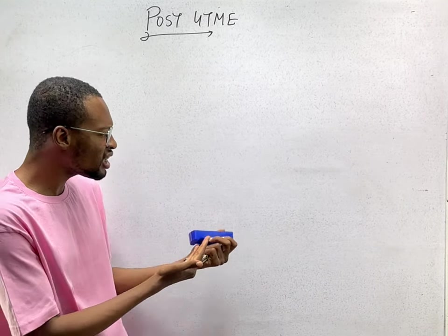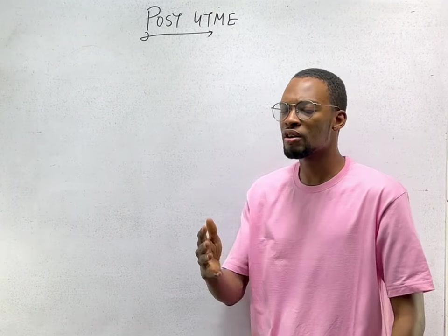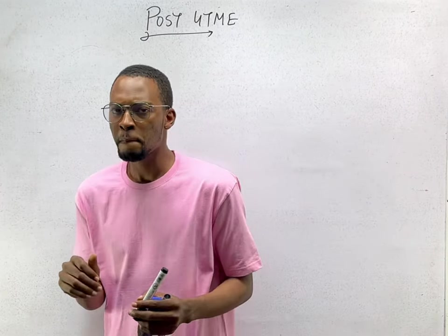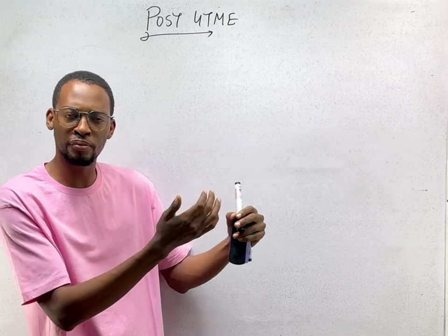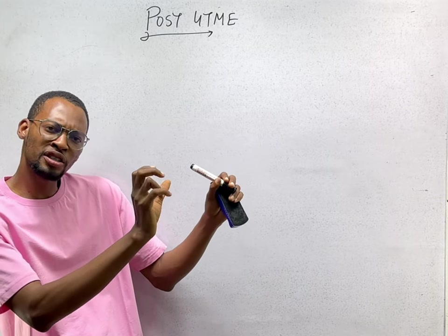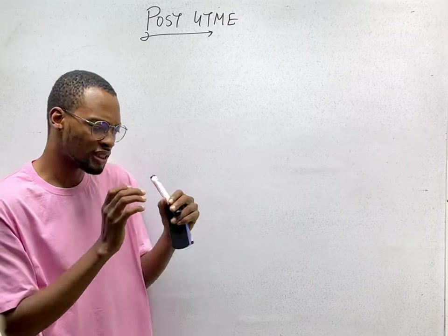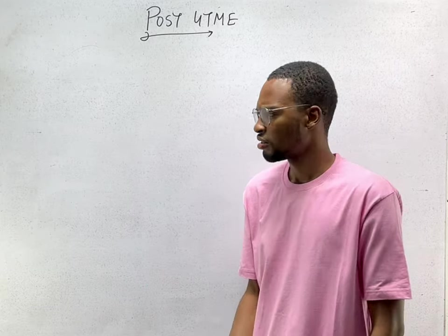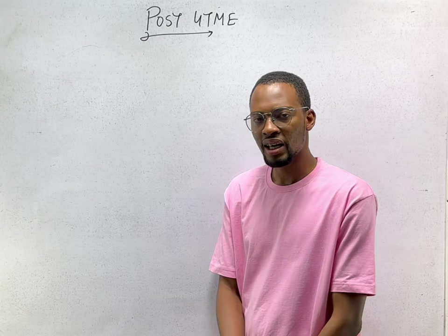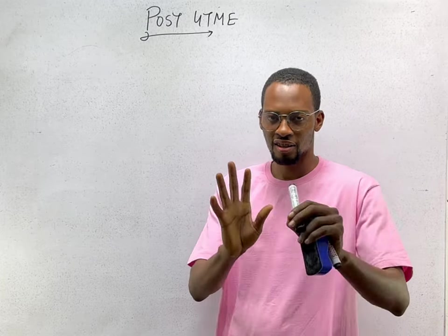In a JAMB or post-UTME question, you may see two words in a sentence. I saw him cross the road. I saw him crossing the road. Ladies and gentlemen, you may be tempted to pick either of those options. Meanwhile, the sentence has subtle explanation or certain keywords that will make the one you least expect to be correct. If I say, I stood by the train station and I saw John A cross the road, B crossing the road, statement 1.